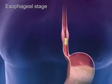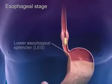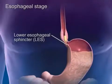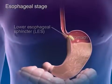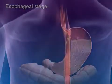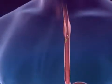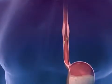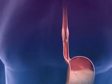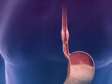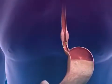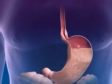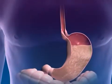As the bolus travels through the esophagus, the lower esophageal sphincter relaxes, allowing the food to enter the stomach. If the bolus is sticky and adheres to the esophagus, secondary peristaltic waves triggered by the intrinsic plexus at the point of distension completely clear the esophageal lumen to finish the swallow.